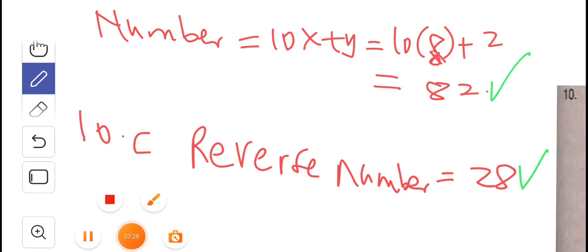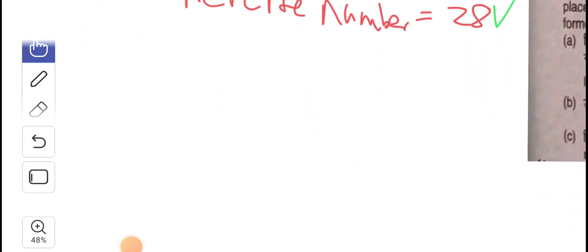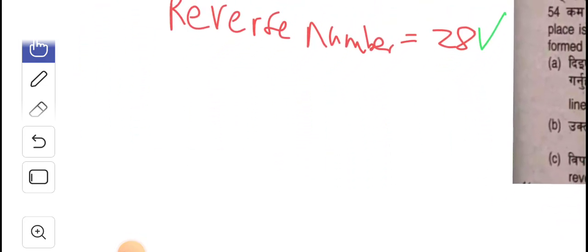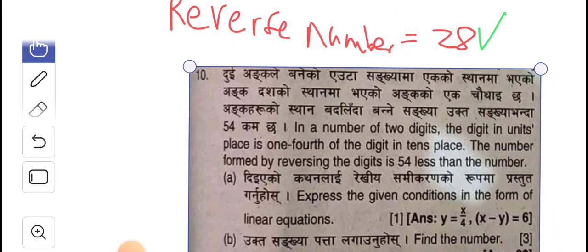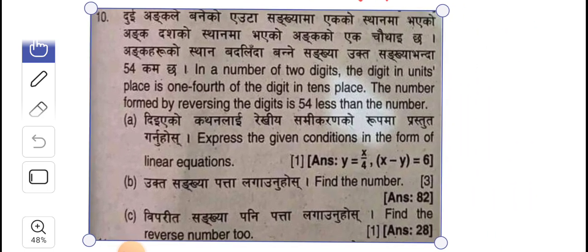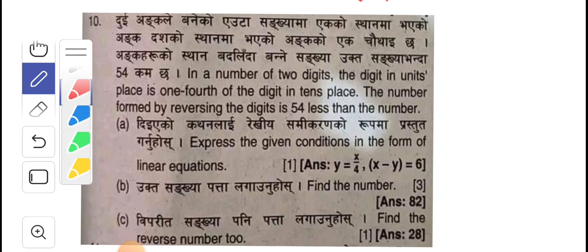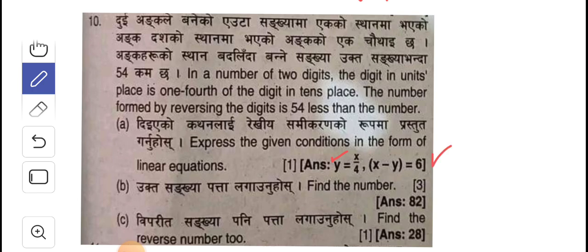So, thanks everyone. And now, we would remember that the question we did here was basically to solve this question. Just to solve this. That's what we did. So, we're able to show that y is equal to x/4. x minus y is 6. We're able to find that the number is 82. The reverse number is obviously 28. Okay. So, thanks everybody. Goodbye to you.